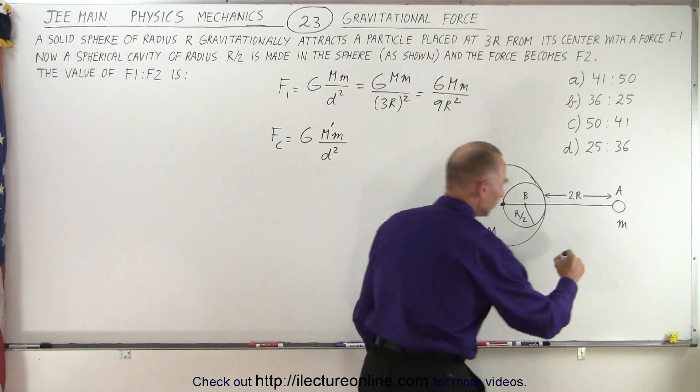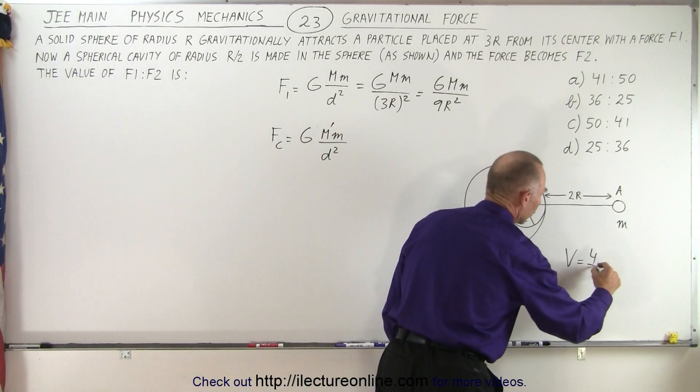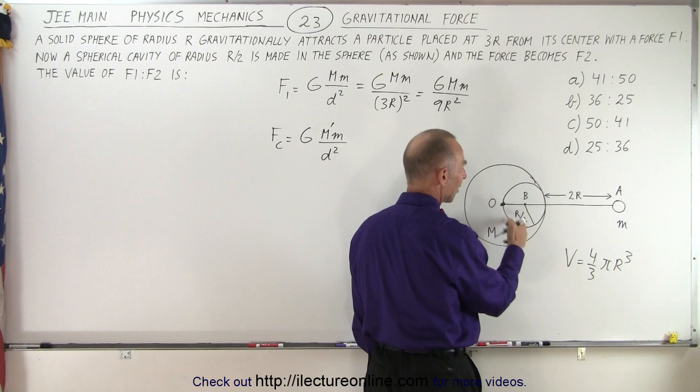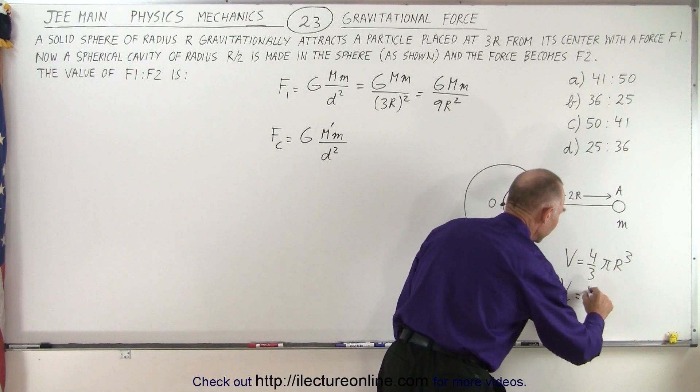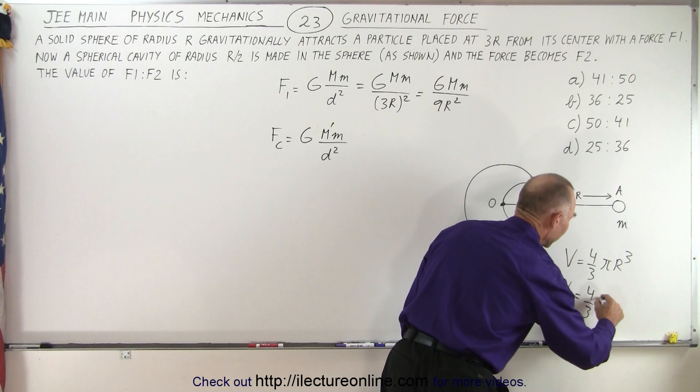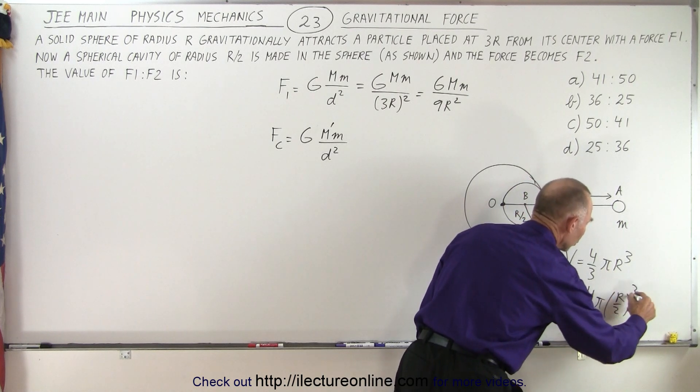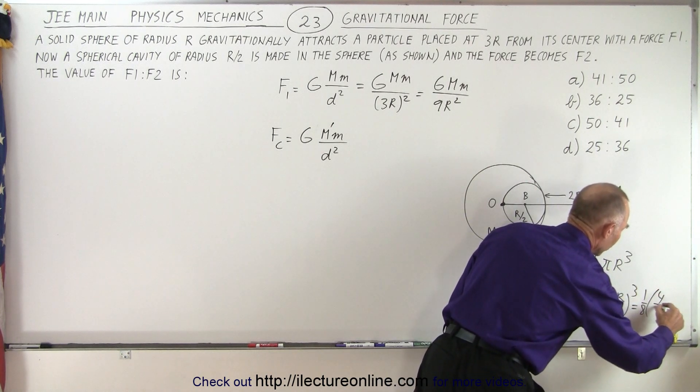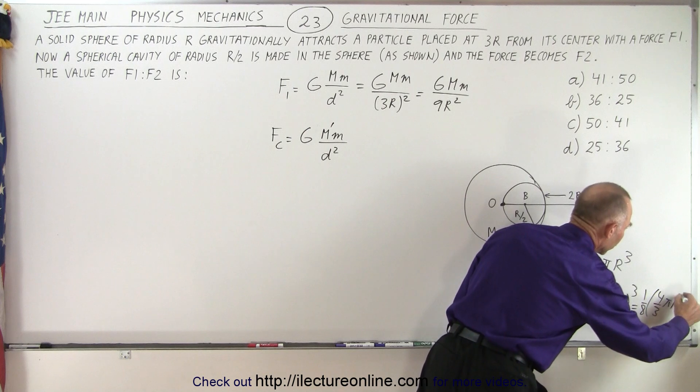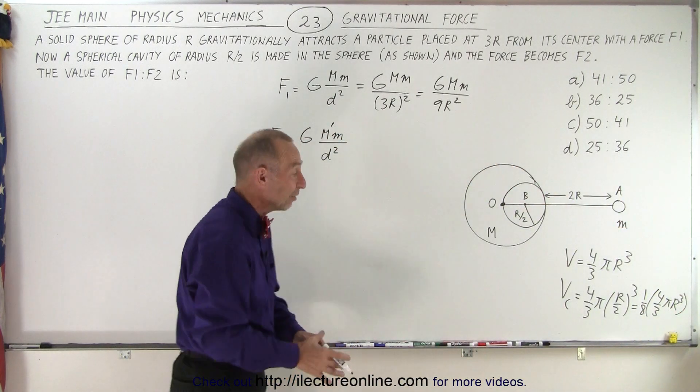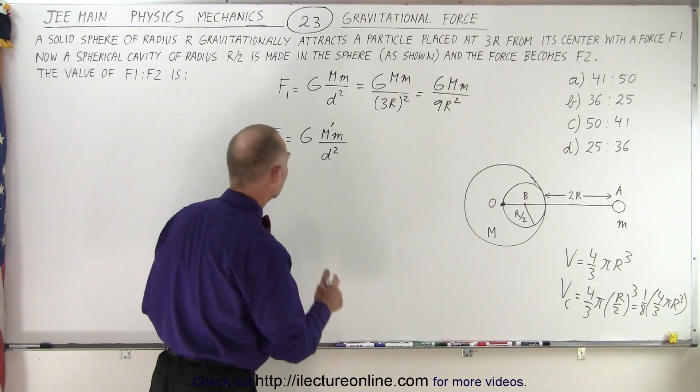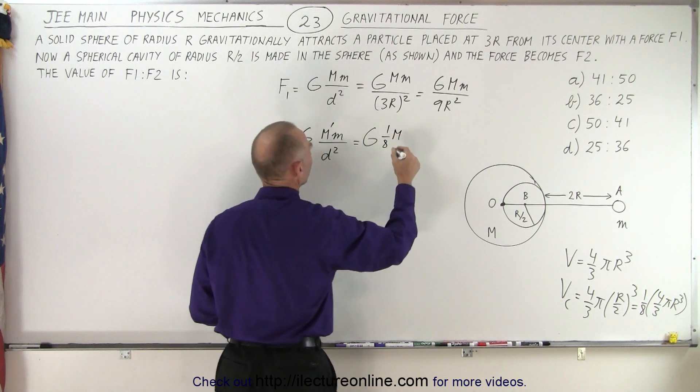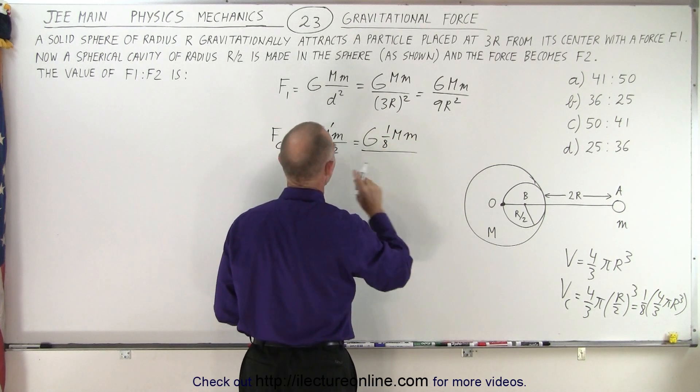Now notice that volume is equal to 4/3 πr³. Now if the radius goes to half the original radius then the volume of the cavity is equal to 4/3 π(r/2)³ which means it's 1/8 because (1/2)³ is 1/8 times 4/3 πr³. In other words the volume of the cavity is 1/8 the volume of the whole sphere. So this becomes equal to G times 1/8 the mass of the whole sphere times m divided by the distance squared.